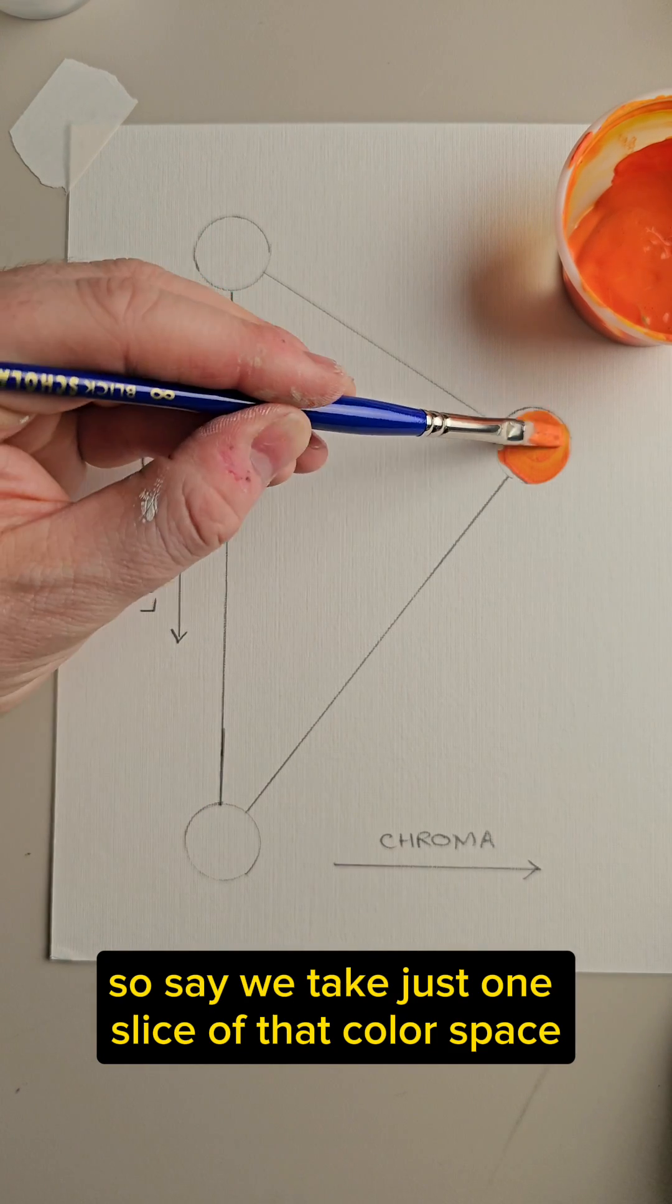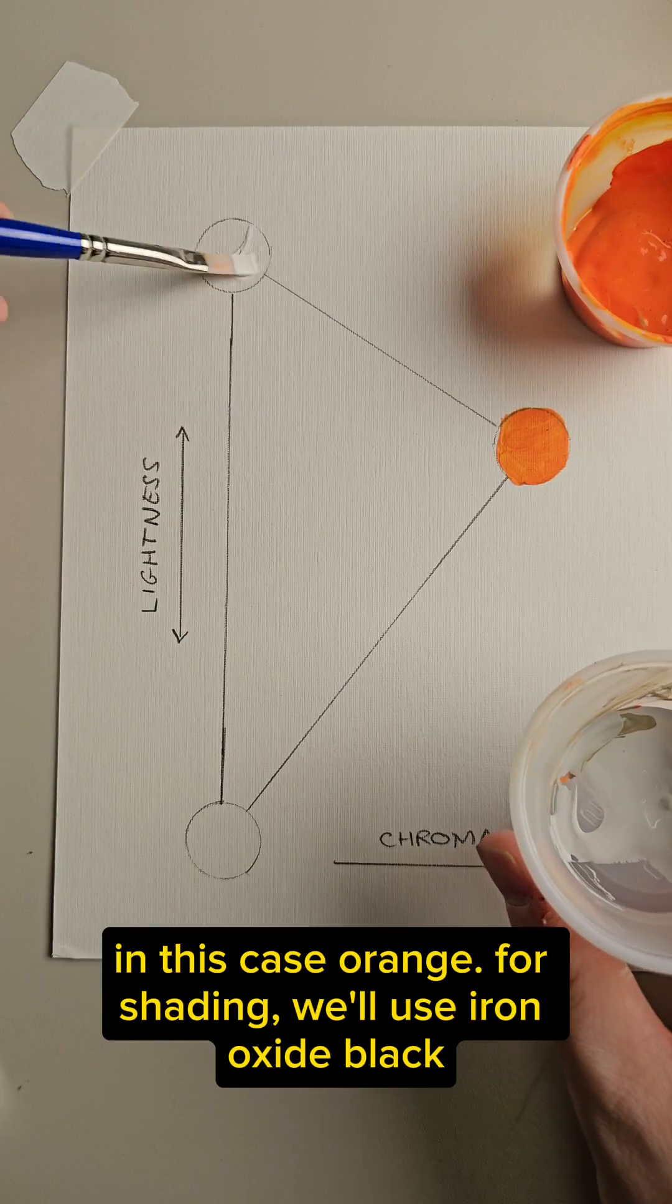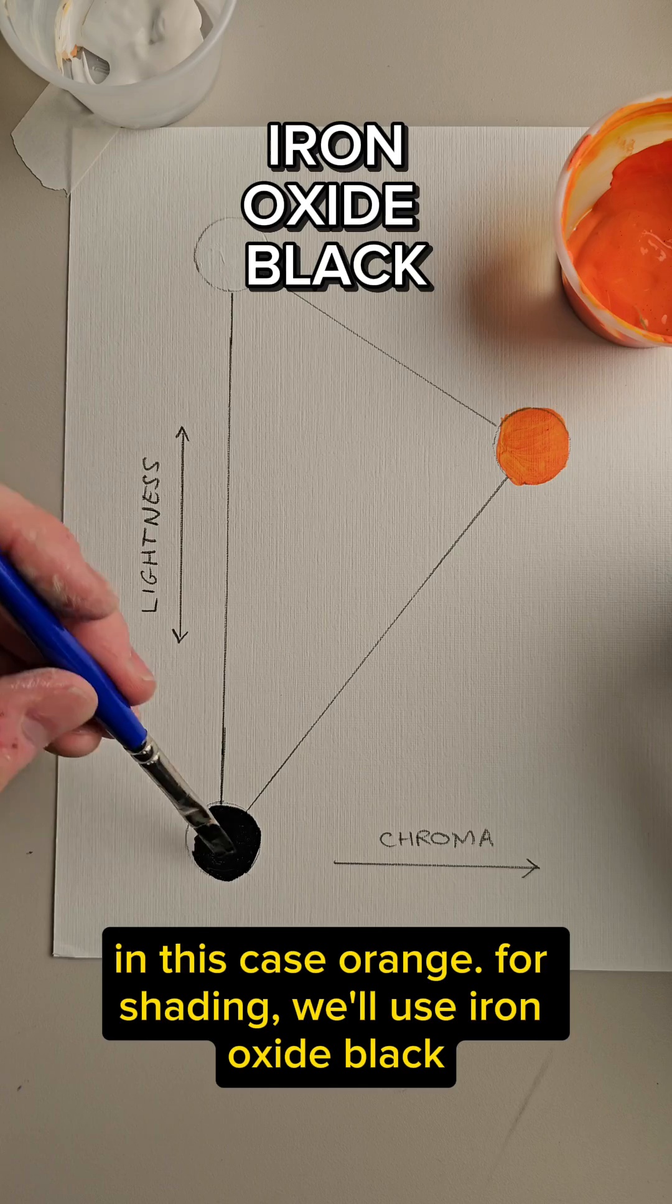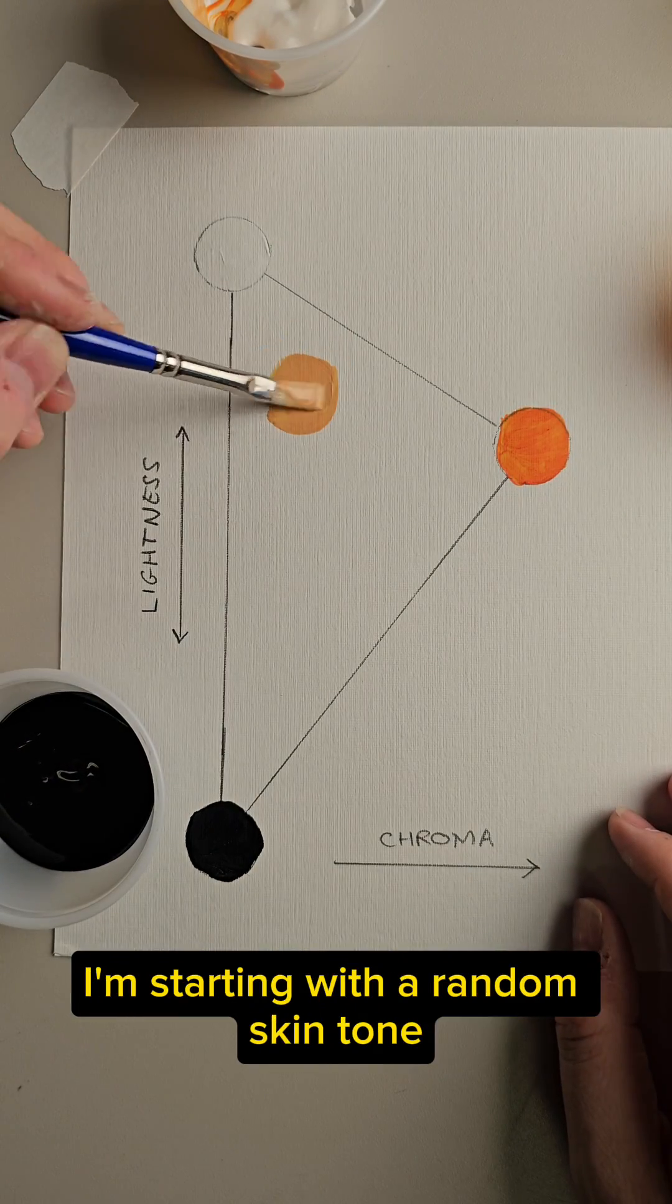So say we take just one slice of that color space that represents all the variations of one hue, in this case, orange. For shading, we'll use Iron Oxide Black, the same pigment that is in Youthphoria's 600. I'm starting with a random skin tone,